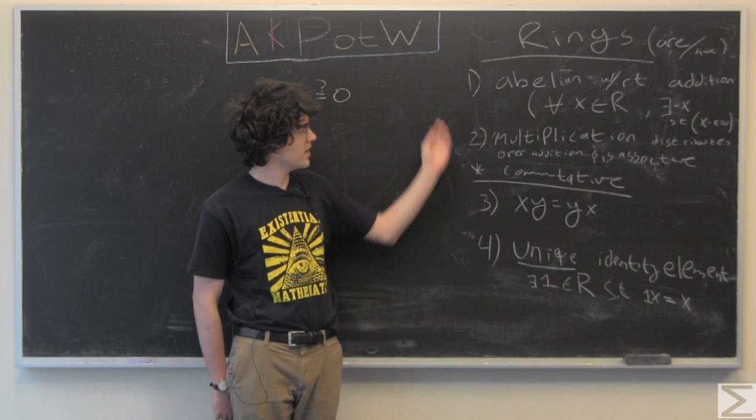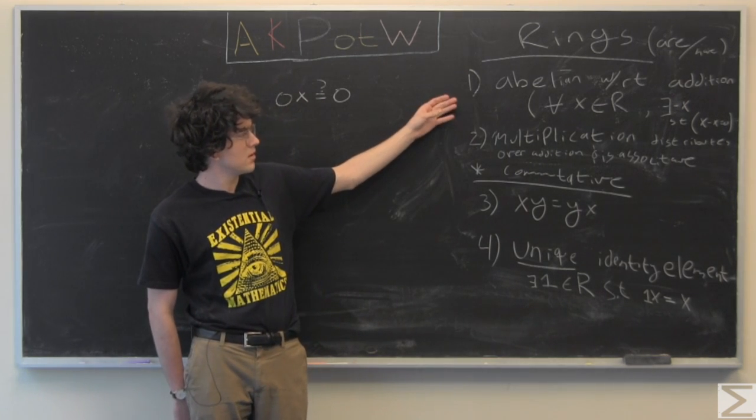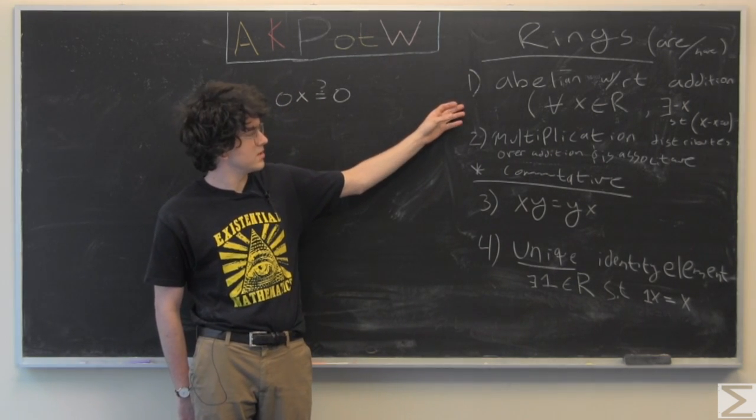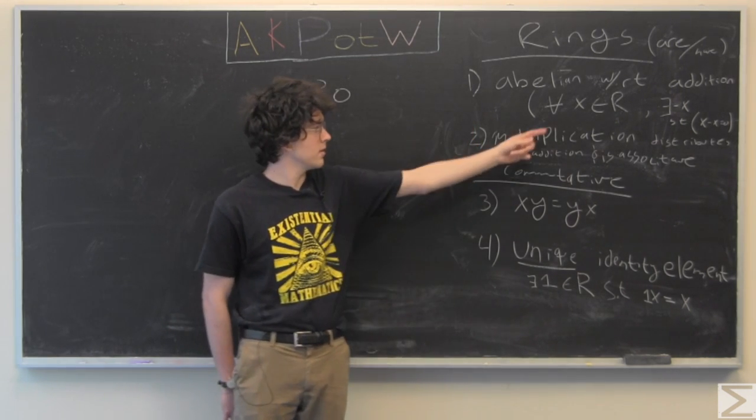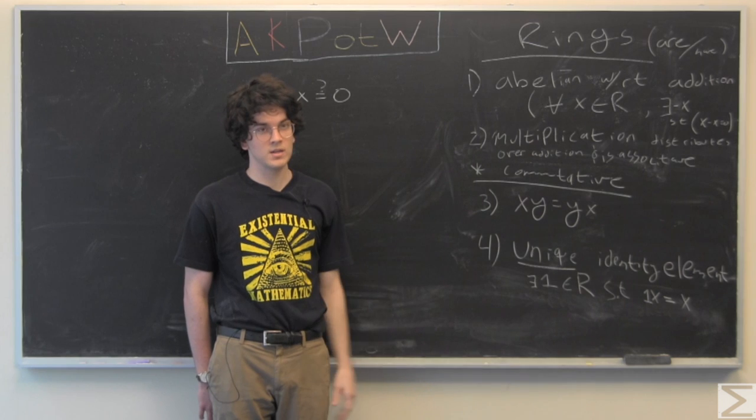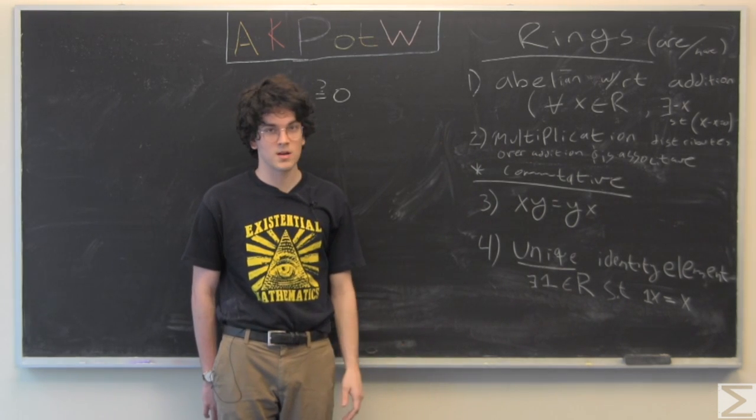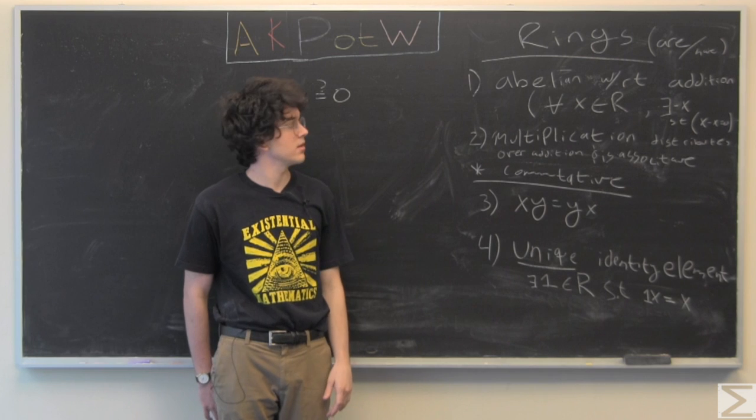Anyways, the axioms of a ring are as follows. They're abelian with respect to addition, meaning that for each x in the ring R, there exists a negative x, such that x plus its negative x is equal to 0.